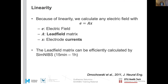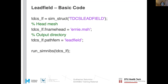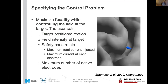The lead field matrix A consists of basis functions calculated by simulating with one electrode at a time while keeping a reference electrode fixed. These lead fields can be calculated efficiently by SimNibs in 15 minutes to 1 hour depending on the computer. The MATLAB code to calculate a lead field is just four lines: set the TDCS lead field structure, set the head mesh name, set the electrode positions, and run.